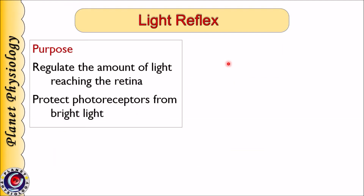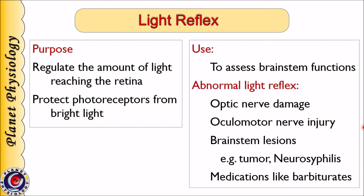Light reflex allows the eye to adjust the amount of light reaching the retina and to protect photoreceptors from bright light. Clinically, it is elicited to assess brainstem function. Light reflex will be abnormal — it can be totally absent, delayed, or reduced in intensity — and this can happen in damage of the optic nerve or oculomotor nerve, or in case of brainstem lesions.